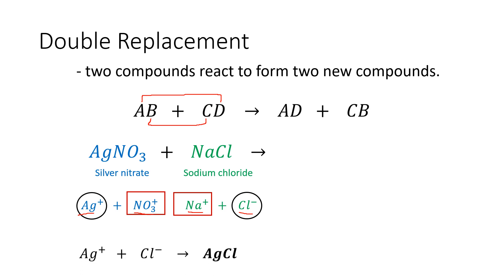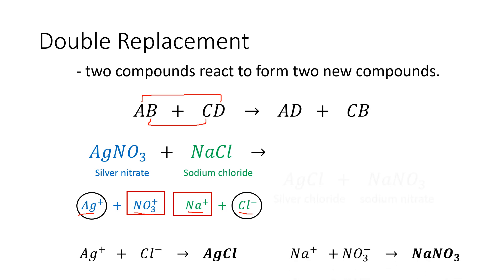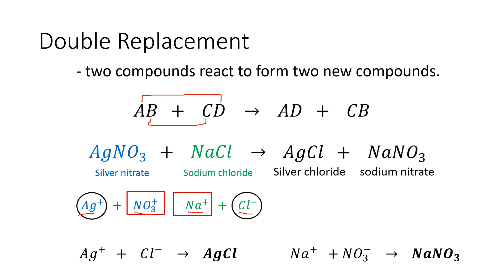So the products for this reaction will be silver chloride and sodium nitrate. This is how we predict the products of a double replacement reaction. For the reaction of silver nitrate and sodium chloride, the products are silver chloride and sodium nitrate.